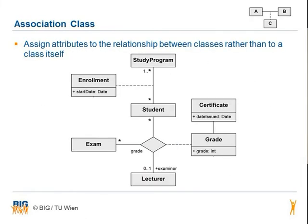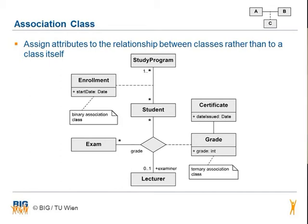An association class assigns attributes to the relationship between classes rather than to a class itself. In this example there are two association classes: enrollment and grade. Enrollment is a binary association class and grade is a ternary association class. Objects of these classes only exist when there is a relationship.